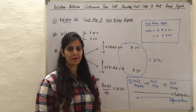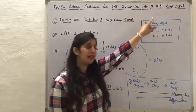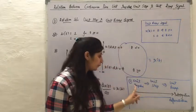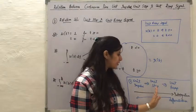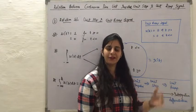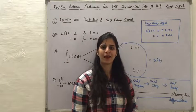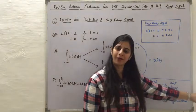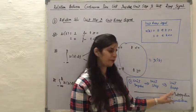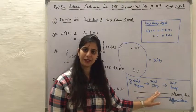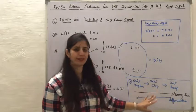Ultimately, the relation between continuous time unit impulse signal, unit step signal, and unit ramp signal is: when we integrate the unit impulse signal, we get the unit step signal; and when we integrate the unit step signal, we get the unit ramp signal. Further integration of the unit ramp gives a parabolic signal. The reverse is also true: differentiating the unit ramp gives the unit step, and differentiating the unit step gives the unit impulse signal.